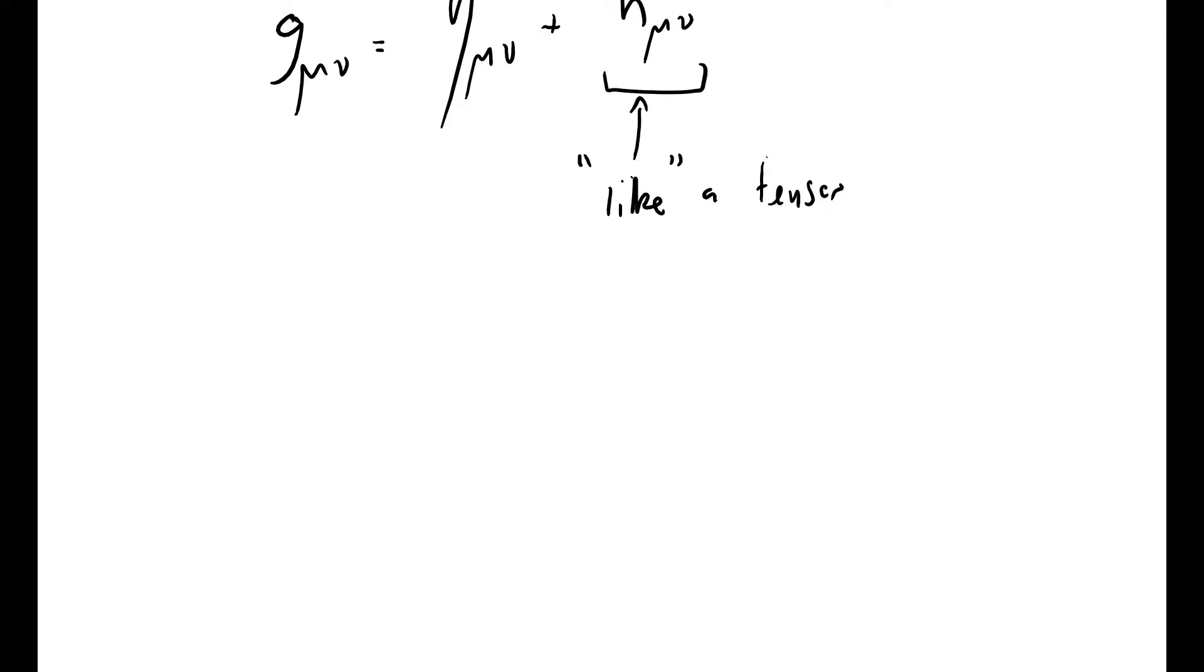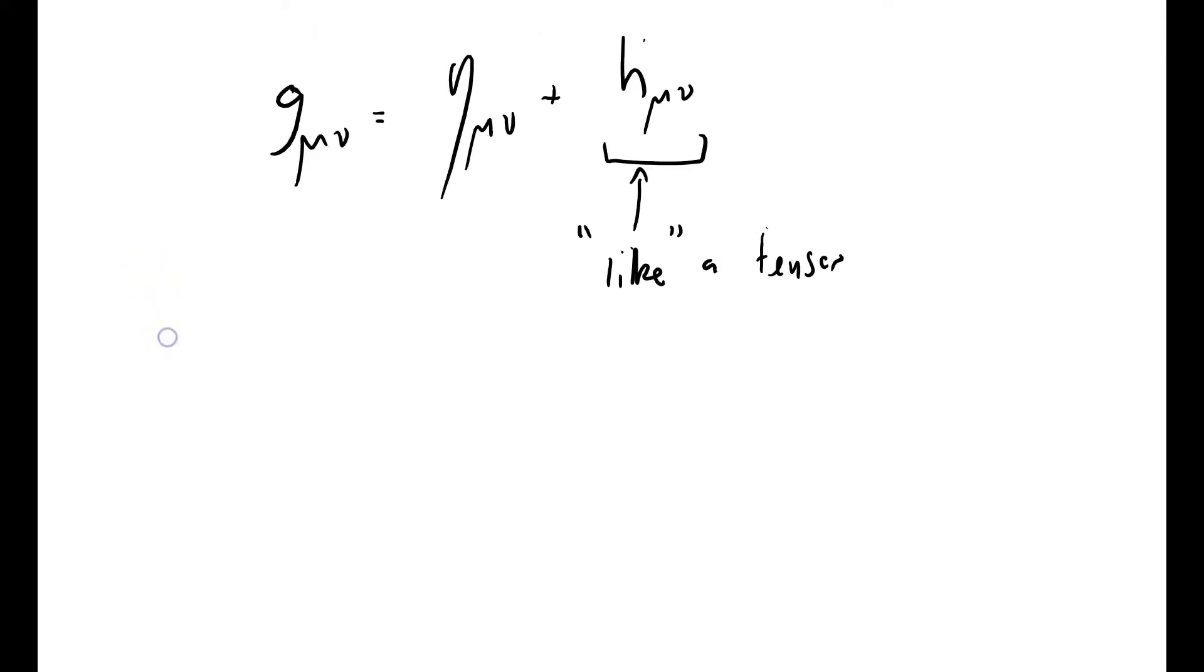General relativity, step by step. Last time I was talking about the linear case, and I made the observation, or the assertion, that this component here of the metric tensor behaves like a tensor. I was a little bit coy about exactly what way it does behave like a tensor.